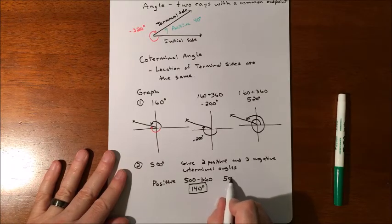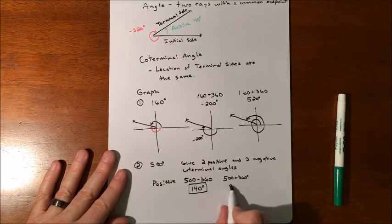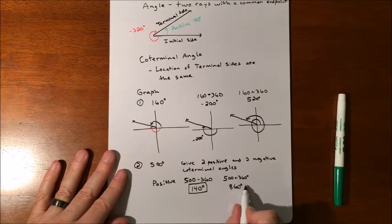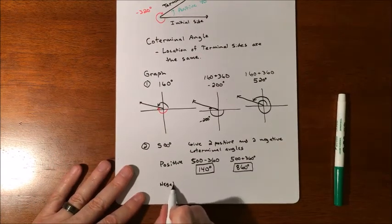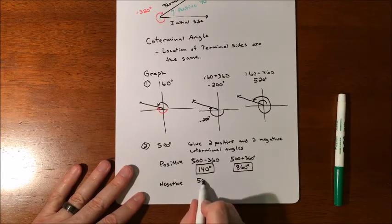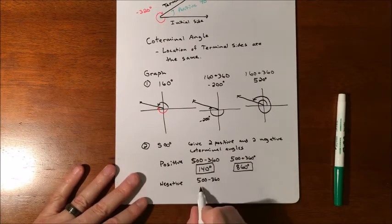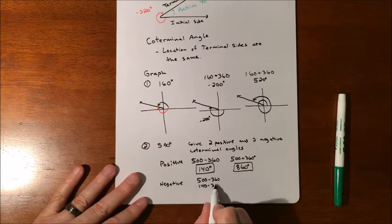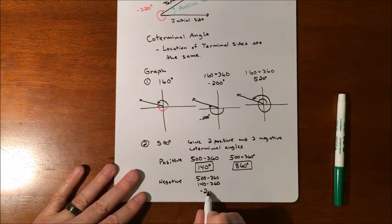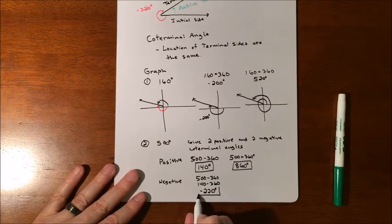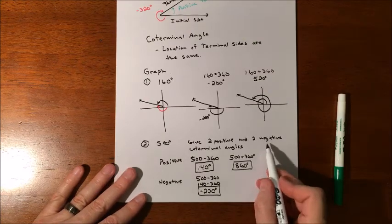But then you could take 500 and add 360. So you'll have 860. So if you draw those, they'd be in the exact same location. If you wanted some negatives, you would take your 500, subtract 360, which is going to get you 140. But then you've got to subtract 360 one more time, and that'll get you further into the negatives, or actually into the negatives. So negative 220 degrees.